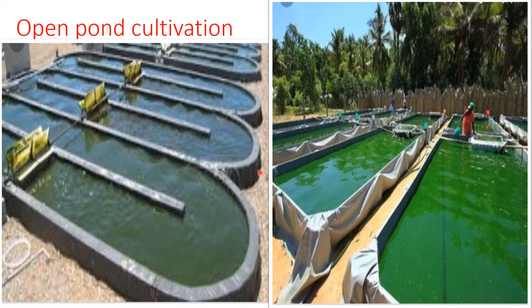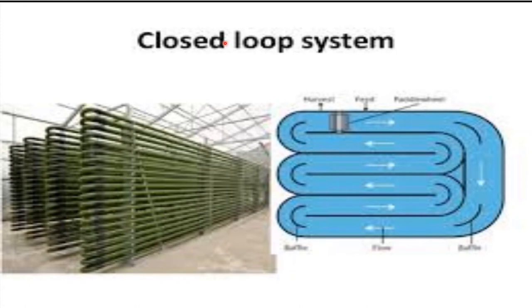Some examples of open pond cultivation are spirulina and chlorella. For the closed loop system, an example is the photo bioreactor. An alternative to open ponds for large-scale production of microalgal biomass are photo bioreactors.